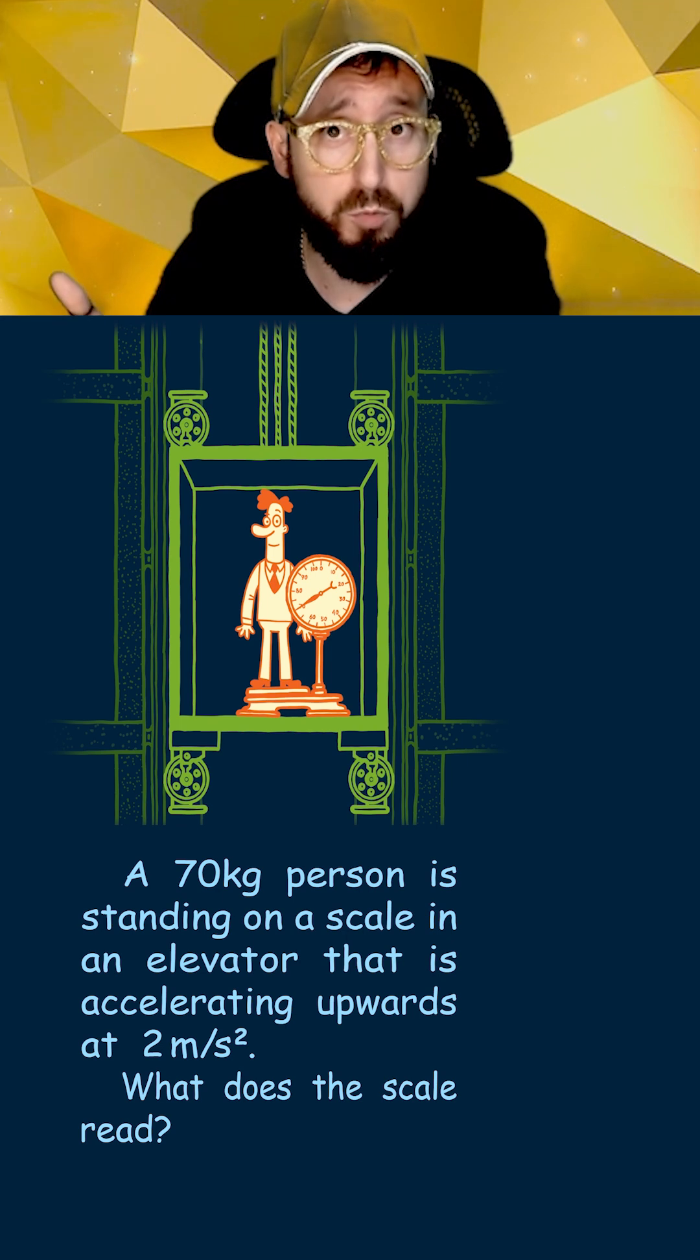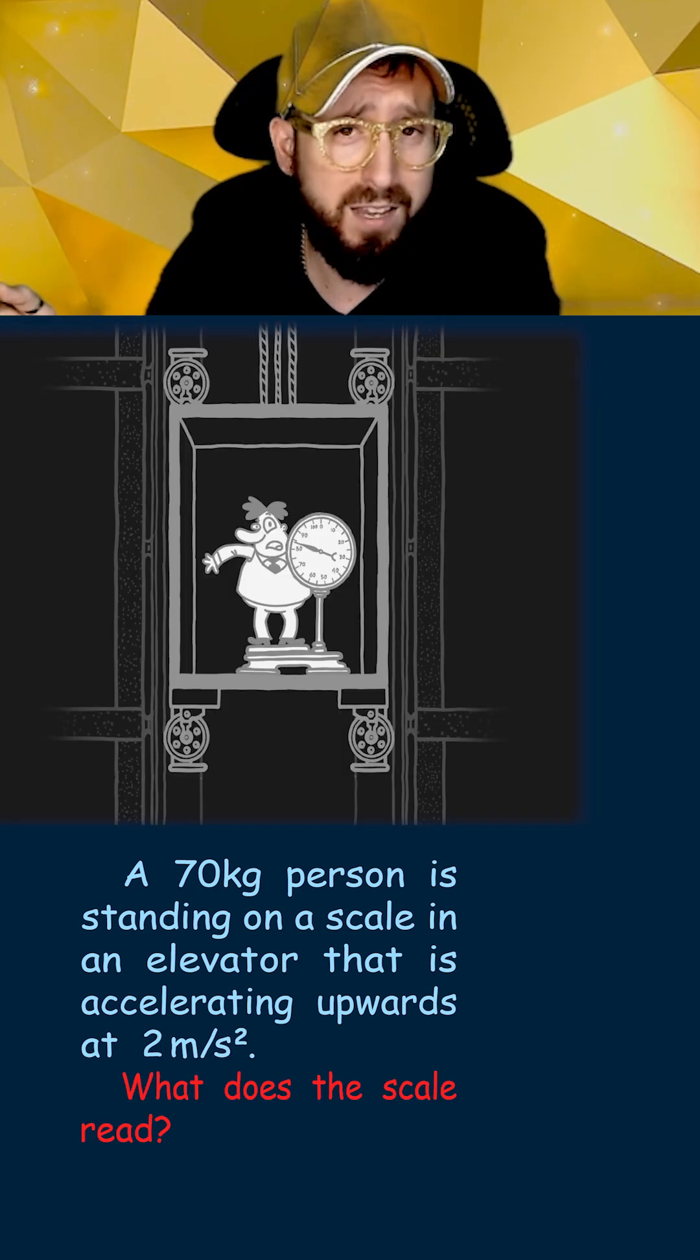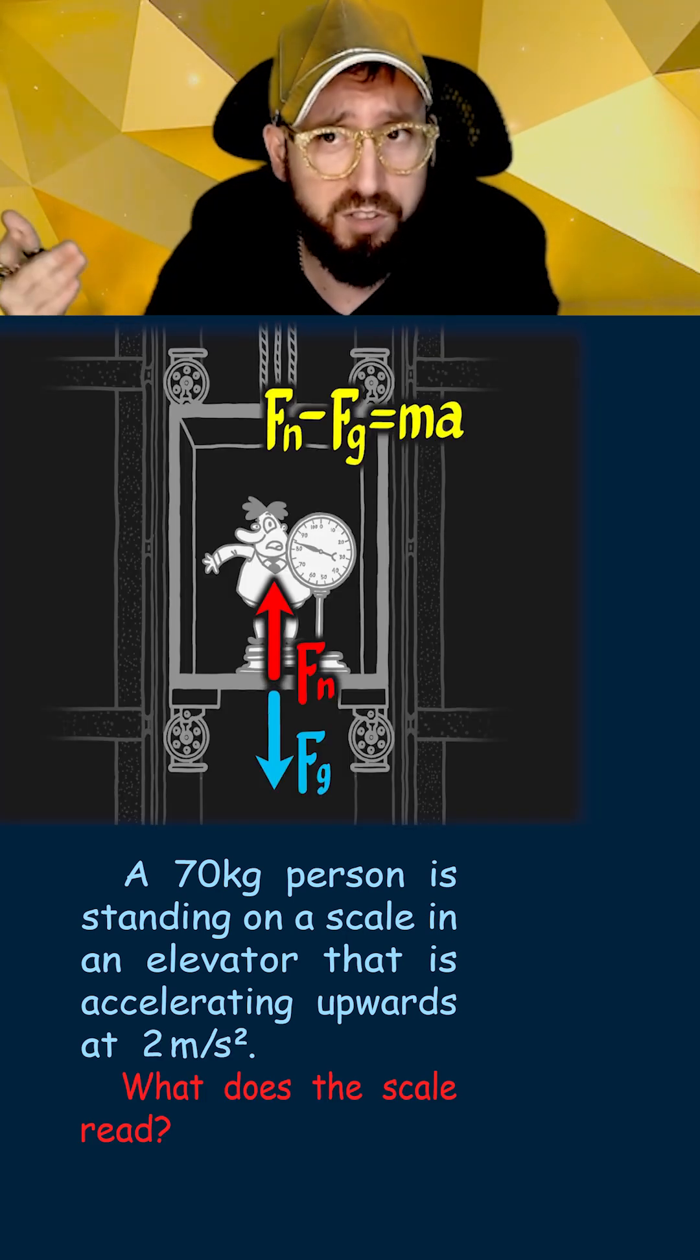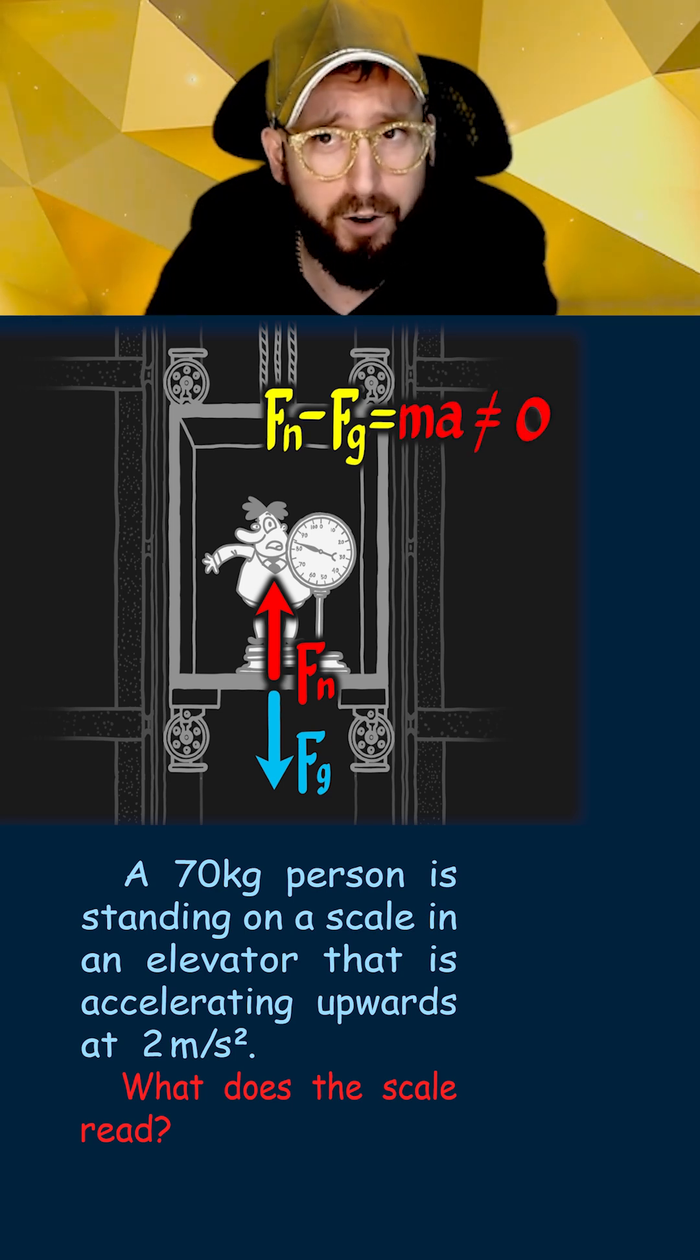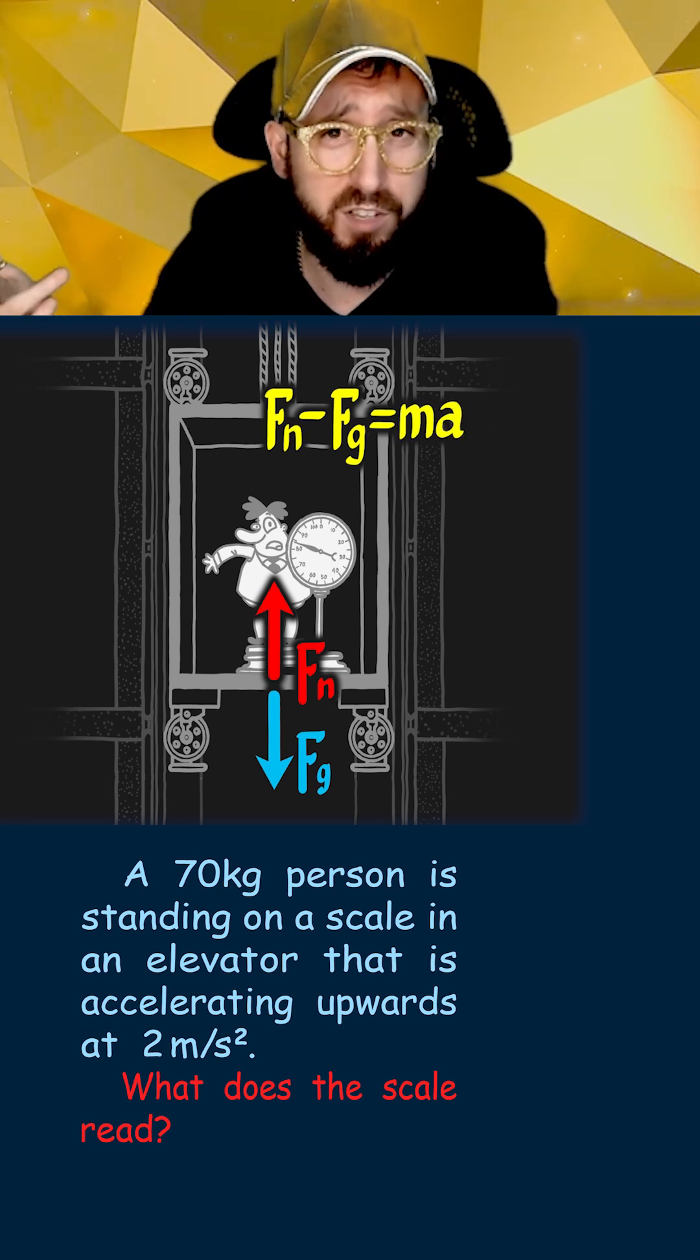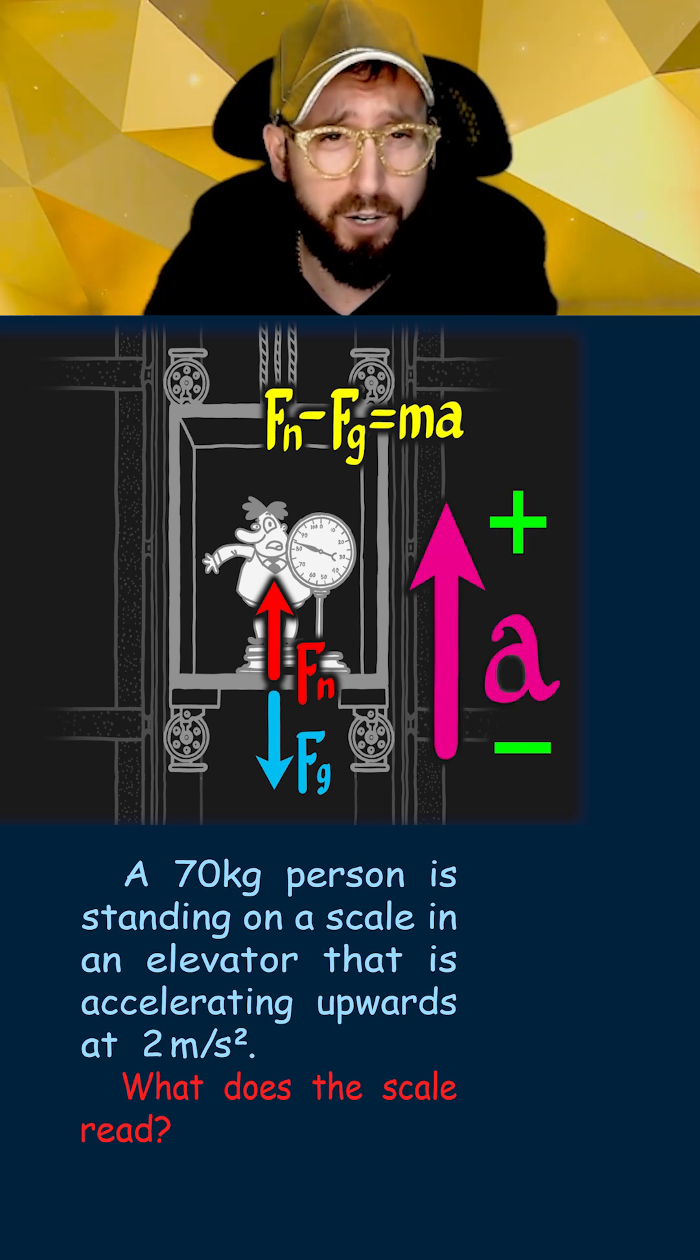Now let's say the elevator starts moving upwards and accelerates at 2 meters per second squared. Again, we're going to draw our force diagram, which has the same force of gravity. However, the normal force is going to be different, because now the acceleration isn't zero. Since the elevator is accelerating up, I'm going to draw an acceleration arrow in the up direction as well.